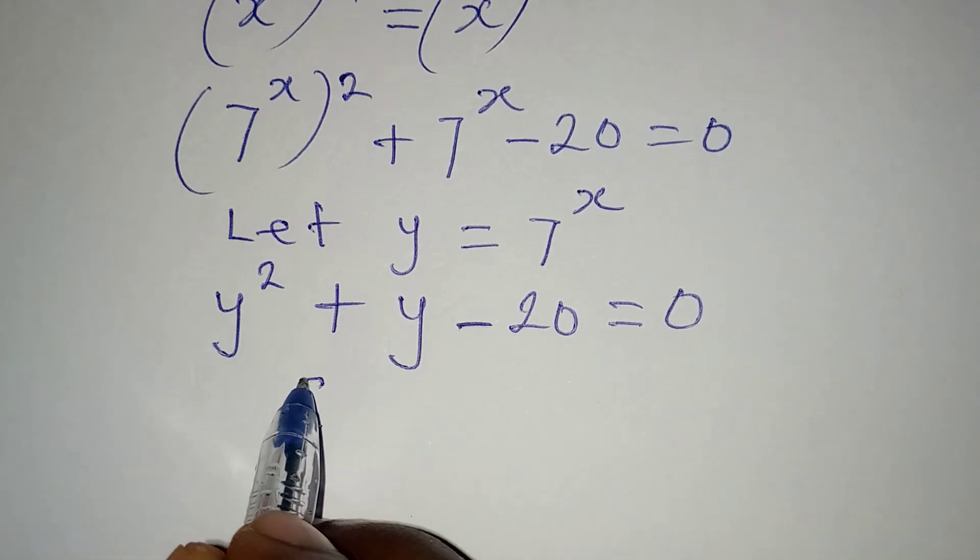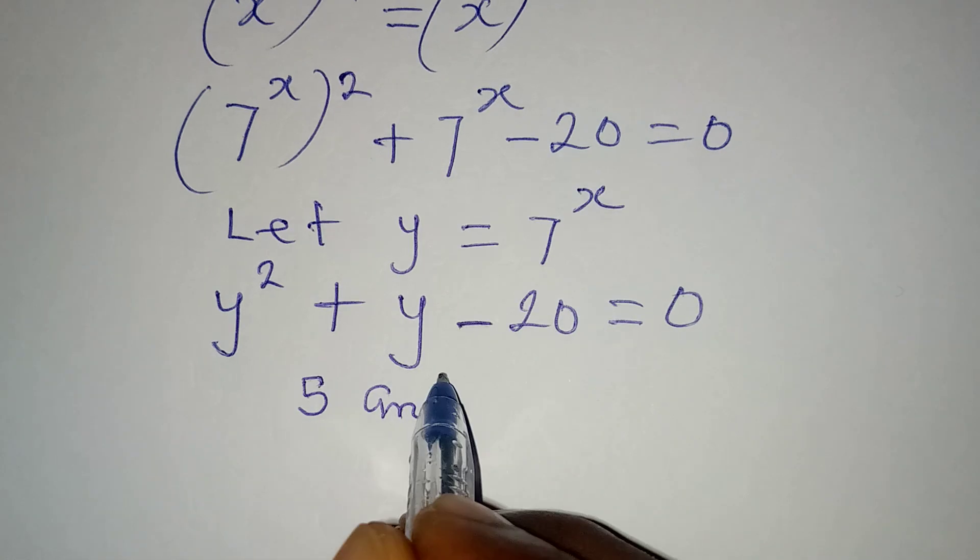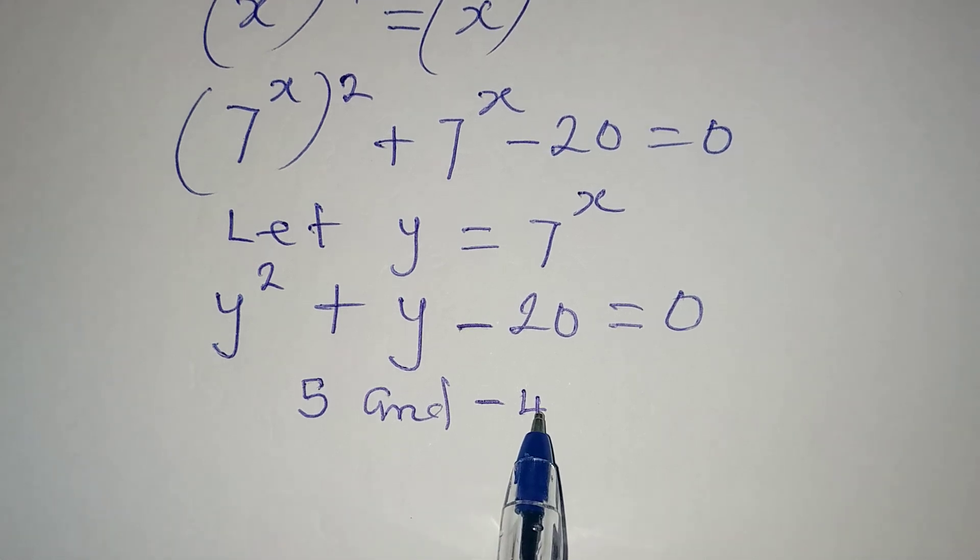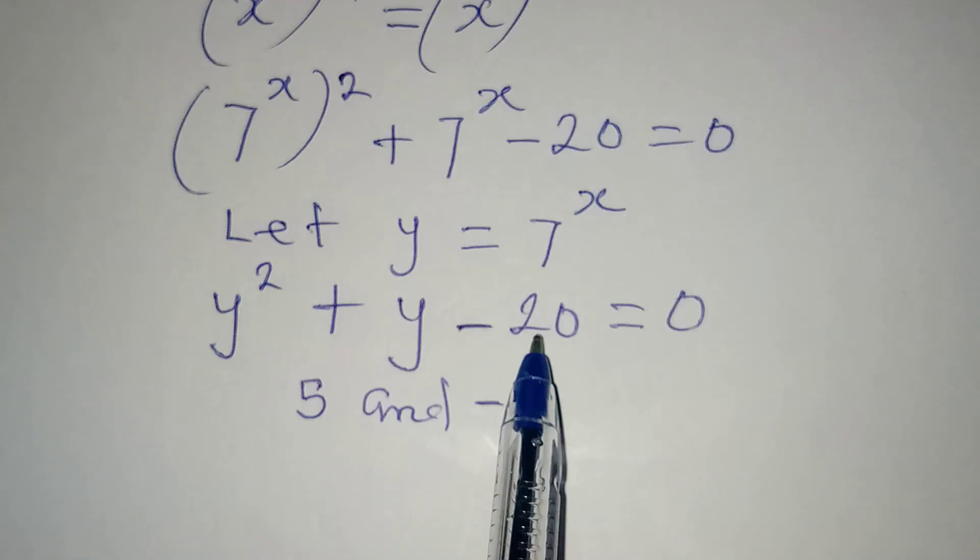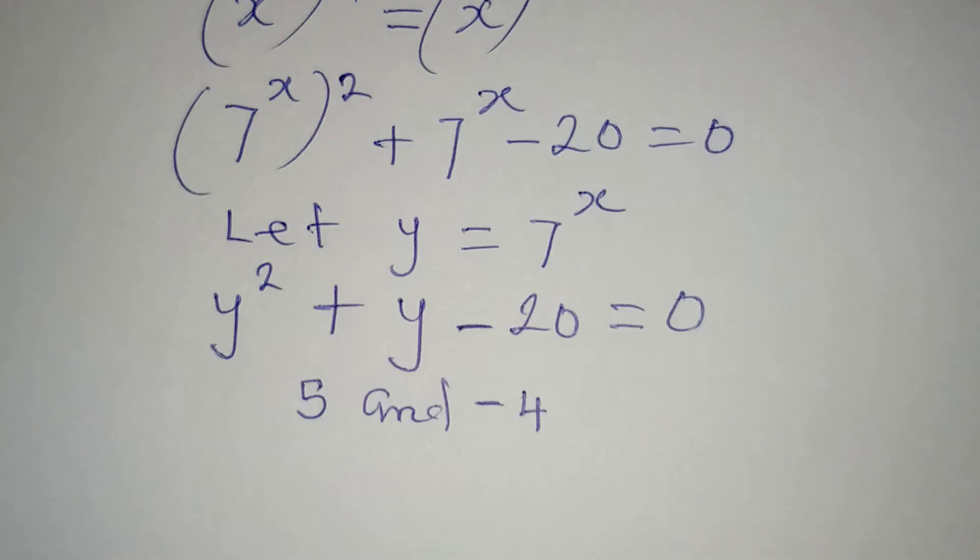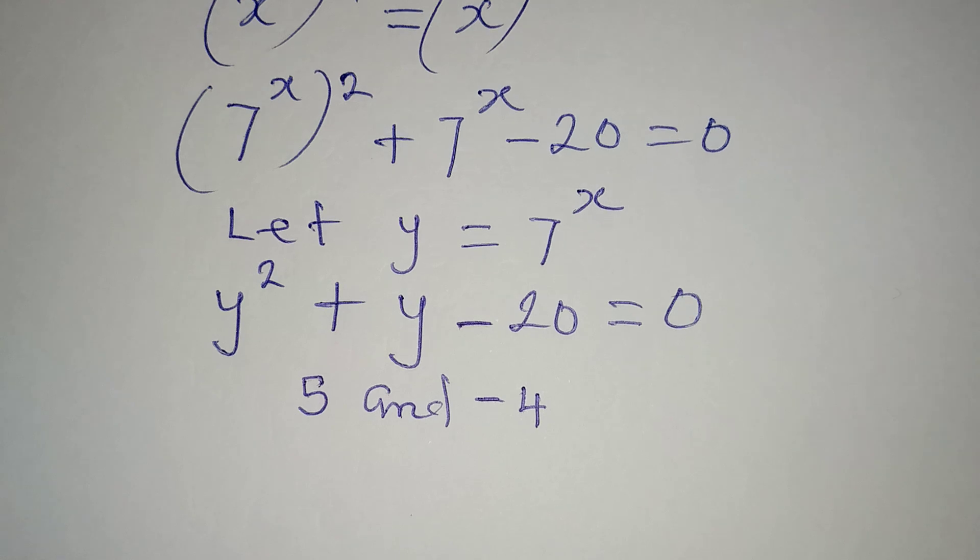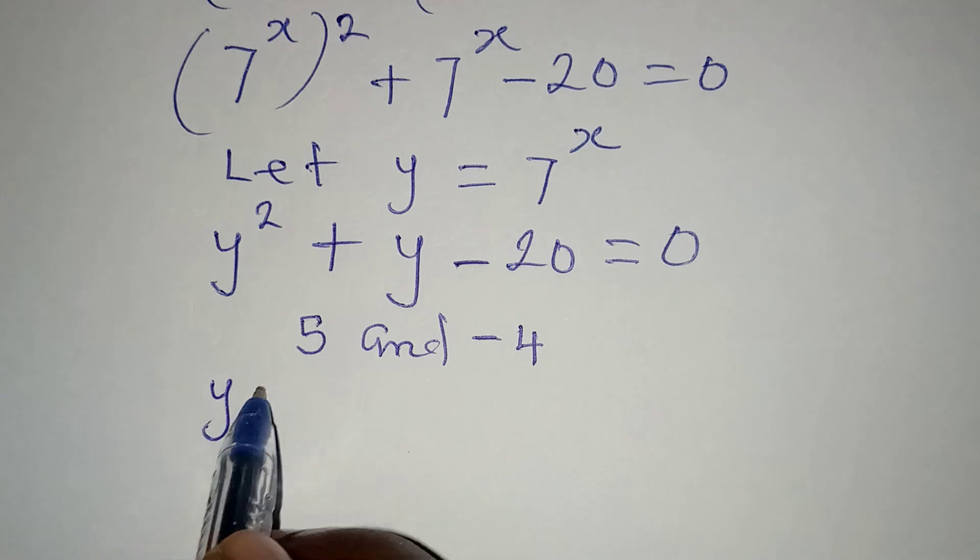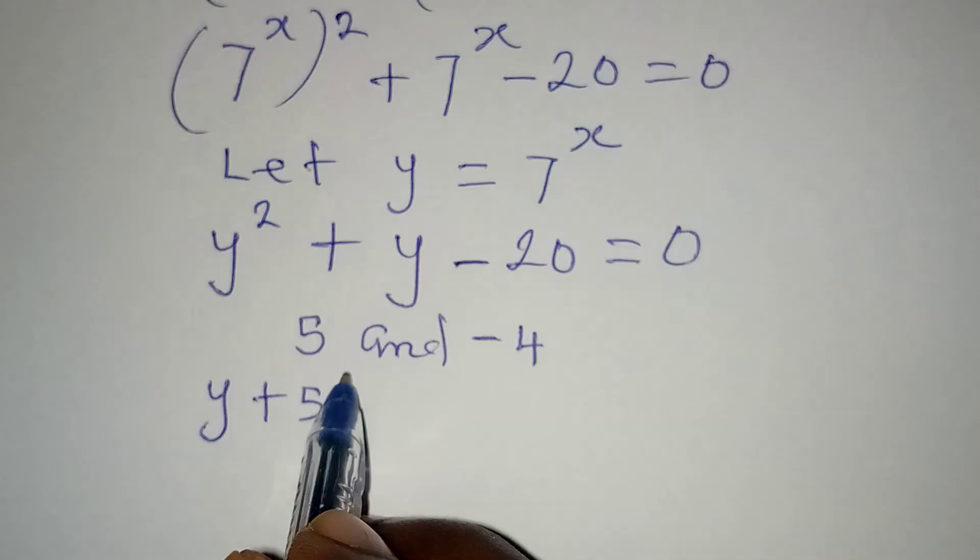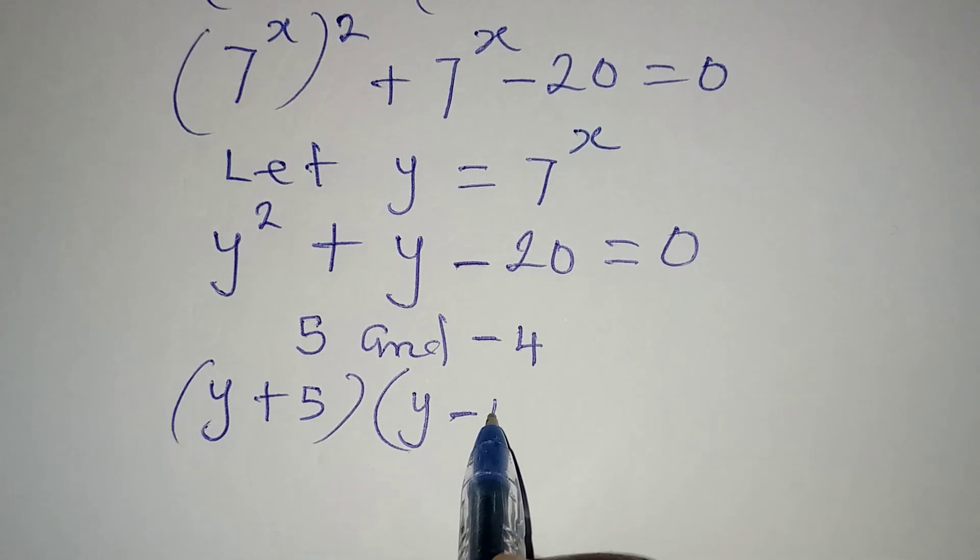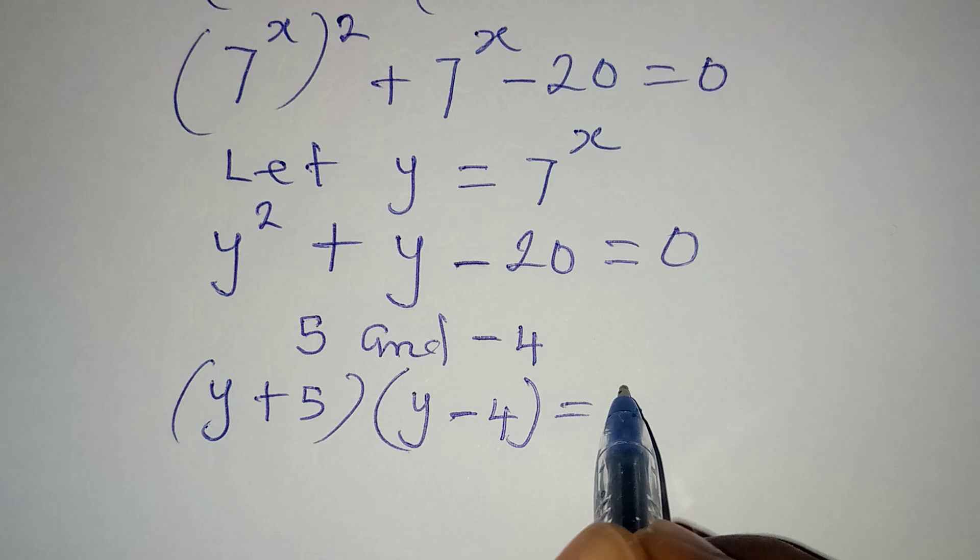So the numbers will be 5 and minus 4, because 5 times minus 4 will give us minus 20, and 5 plus minus 4 will give us plus 1. Now let's put this back into factored form. We're going to have y plus 5 in one bracket, and in the other bracket, y minus 4, both equal to 0.